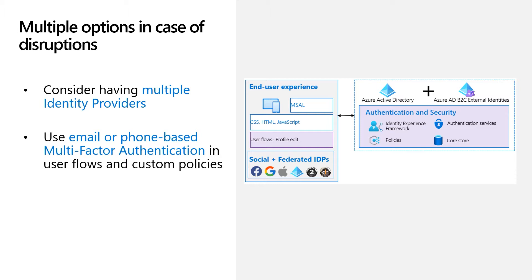Now, what if there is a potential outage with your phone provider? If you prefer changing your applications, you need to define two sets of user flows — one set using phone OTP and the second with email OTP. During an outage, you can update your application to point to the fallback user flow. If you are using custom policies, you should expose both options to your users and let them self-select between the two. Note that there is no need to make changes to the policies or applications.